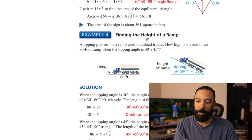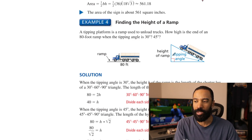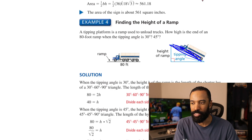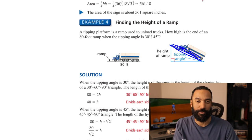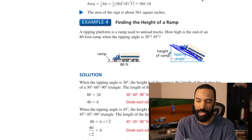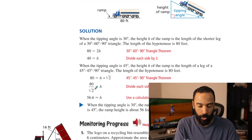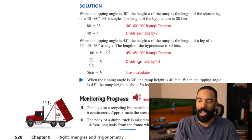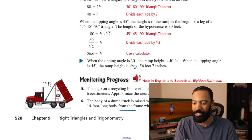Let's find the height of a ramp. A tipping platform ramp is used to unload trucks. How high is the end of an 80-foot ramp when the tipping angle is 30 degrees and 45 degrees? In the 30-60-90 case, the ramp is the hypotenuse — twice as long as the height — so we divide 80 by 2 to get 40 feet. For the 45-45-90 case, the hypotenuse is root 2 times larger, so we divide 80 by root 2 and approximate 56.6 feet.